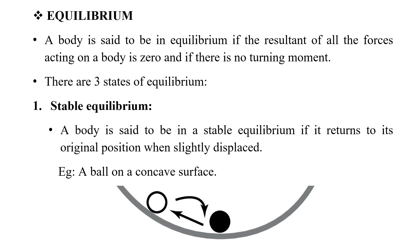Next, we have equilibrium. Equilibrium is the condition where the resultant of all the forces acting on the body is zero, and there is no turning moment.